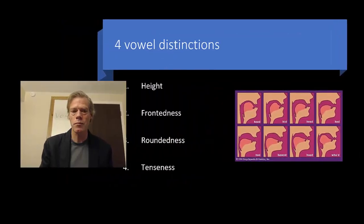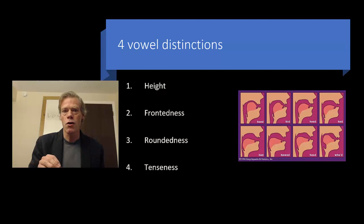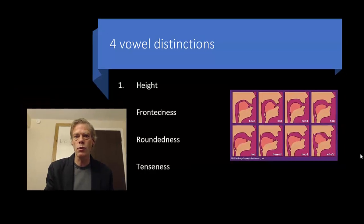IPA vowels. Just as we did with consonants, where we had three distinctions, with vowels we're going to have four distinctions: height, frontedness, roundedness, and tenseness. These are going to be used to differentiate all of the vowels of all languages.